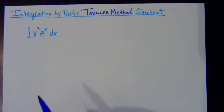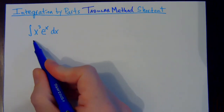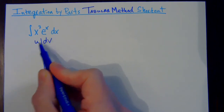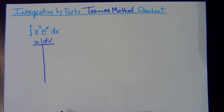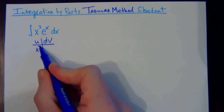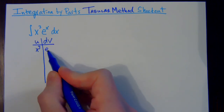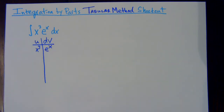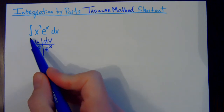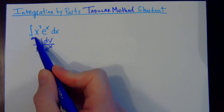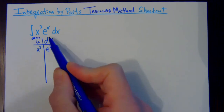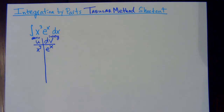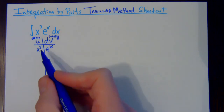Here is the tabular method shortcut to integration by parts. What you do is make yourself a little chart — a little table with a u side and a dv side. I'm going to let the u be x cubed and the dv be e to the x dx. When you put those two original things together, that should equal your original problem. On the u side you take a derivative the whole way down, and on the dv side you integrate.